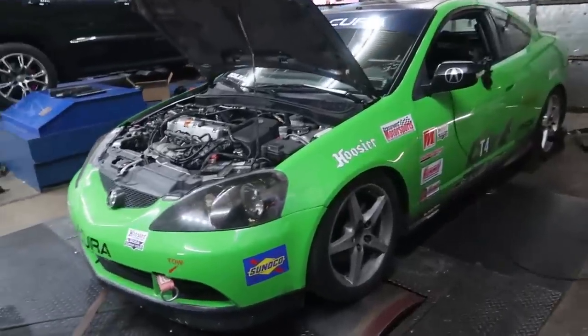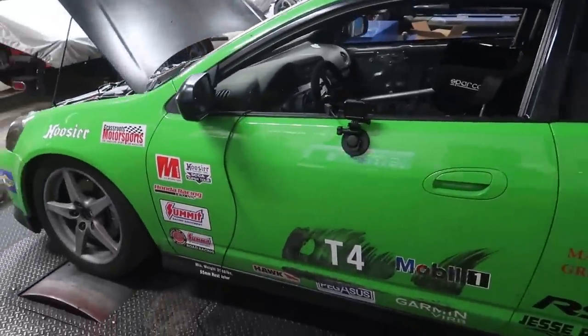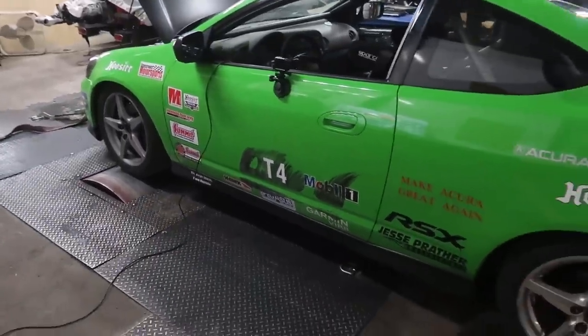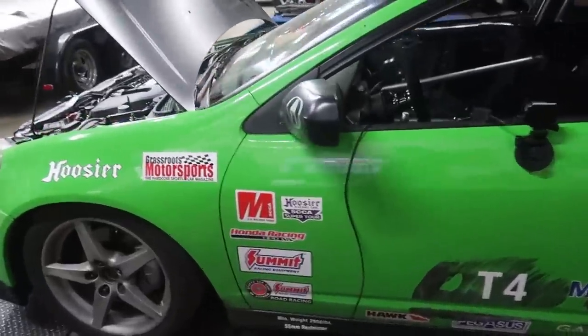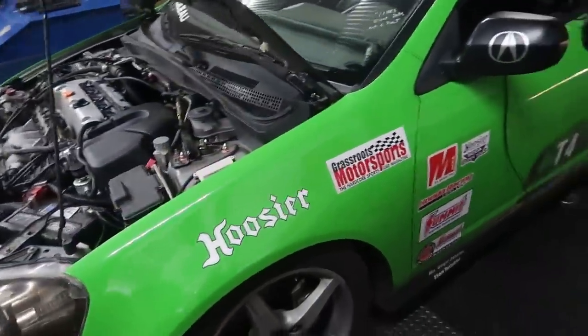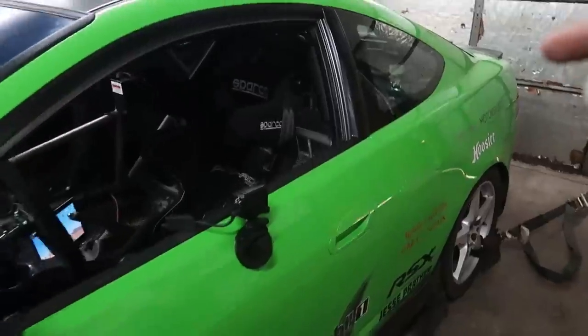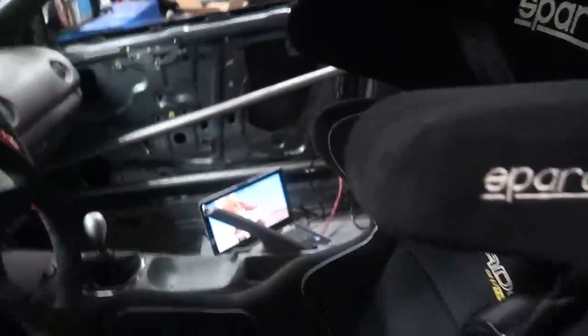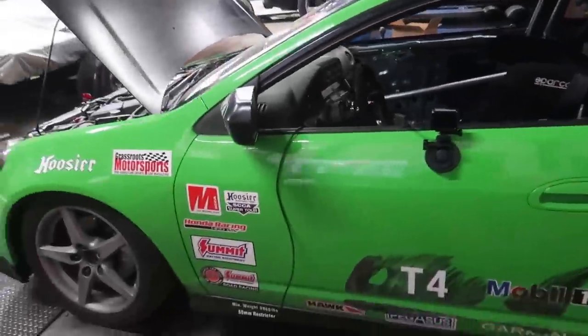Alright guys, this is a little SCCA Erie Touring class car they brought down for me to throw a tune in. This car runs the T4 class, which is basically the car has to remain stock. You're allowed to pull the interior out and make things safer. You can add the roll cage, seat, just safety stuff is pretty much it.